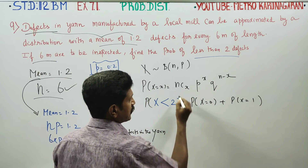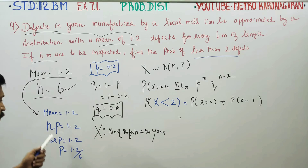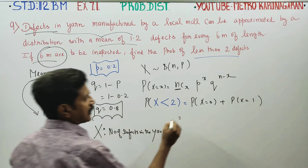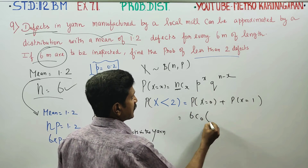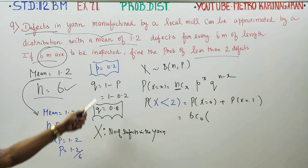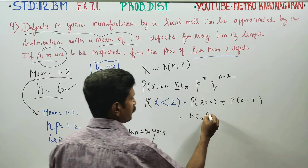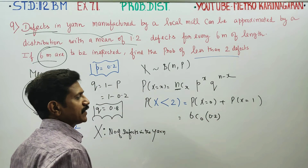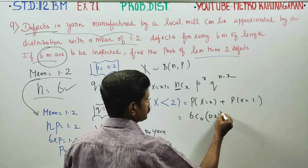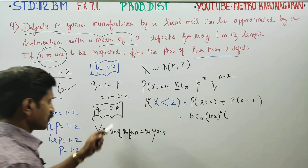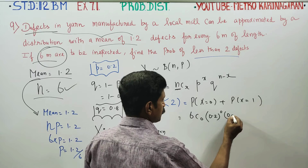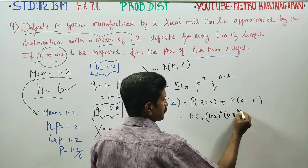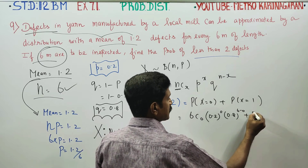Using the formula: for x = 0, we have 6C0 × (0.2)^0 × (0.8)^(6−0). Here p equals 0.2 and q equals 0.8, with n equal to 6.